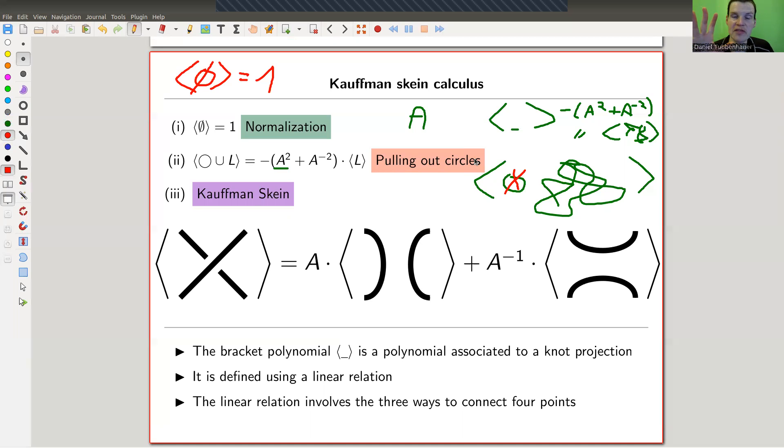This means whenever I have a bunch of circles, you can just reduce the diagram by pulling out all the circles. Eventually you hit the empty diagram, normalized to one. In order to get circles, here comes a relation, you replace a crossing by two smoothings of the crossing. And we'll see in a second that this is enough to just give you a bunch of circles associated to a knot. The main idea is that you have a linear relation among the diagrams with four points, the crossing is equal to a linear combination of the other diagrams you would naively draw with four points.